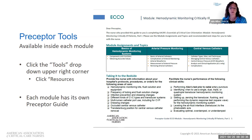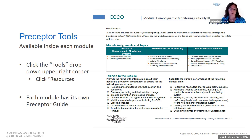This one is the hemodynamic monitoring preceptor guide for module one. It shows the ECHO assignments covered — the basics of hemodynamic monitoring, arterial pressure monitoring, and central venous catheters — and then provides a list of 'taking it to the bedside' activities for the preceptor to discuss with the nurse, such as where hemodynamic monitoring kits are kept, how frequently tubing and flush are changed, how dressing changes are done, and what to do with an occluded central venous catheter.